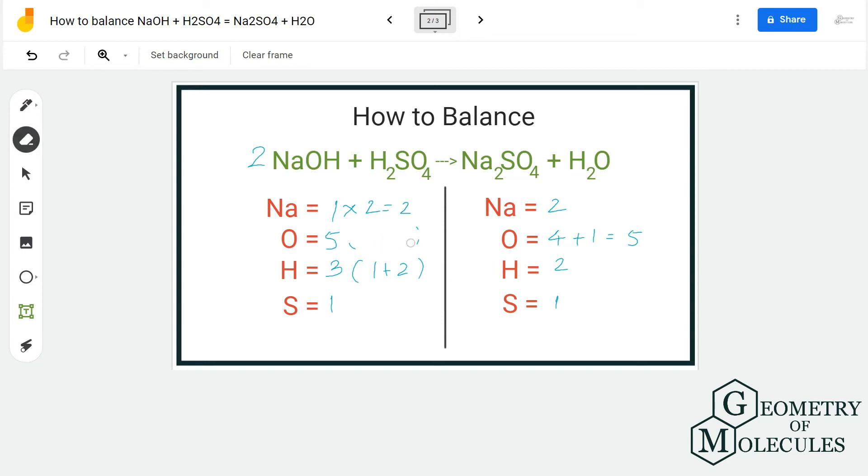The oxygen atoms will be 2 plus 4, which makes it 6. The hydrogen atom will be 2 plus 2, which makes it 4. And there will be no change in sulfur atom because we have not added any number for that. Now let's proceed to the product side and check if it matches with the reactant side.